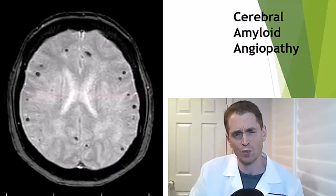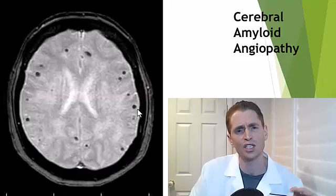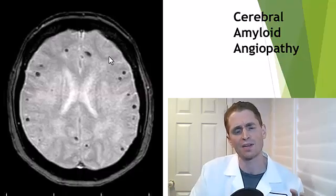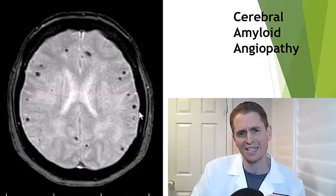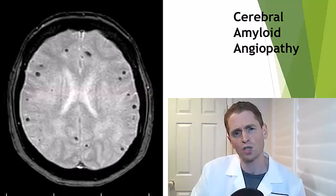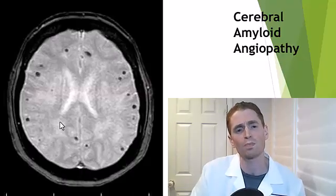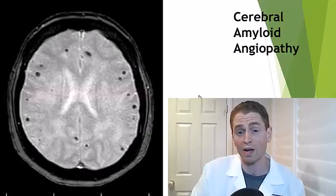MRI is also good at looking at old blood products. This is a gradient echo sequence of MRI — you can get similar findings with the SWI sequence — where older blood products appear dark. Note that calcium also appears dark on SWI and GRE, and in order to differentiate, you could look at a CAT scan or other MRI sequences. This is actually someone with cerebral amyloid angiopathy, associated with Alzheimer's disease, where amyloid plaques occur in the blood vessels, causing them to leak out blood and creating multiple microhemorrhages, though they can be small and asymptomatic.